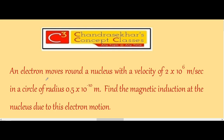An electron moves around a nucleus with a velocity of 2×10⁶ m/s in a circle of radius 0.5×10⁻¹⁰ m. Find the magnetic induction at the nucleus due to this electron motion. The electron is moving in a circular orbit of radius 0.5×10⁻¹⁰ m and velocity 2×10⁶ m/s. What is the magnetic induction due to the motion of the electron at the nucleus?